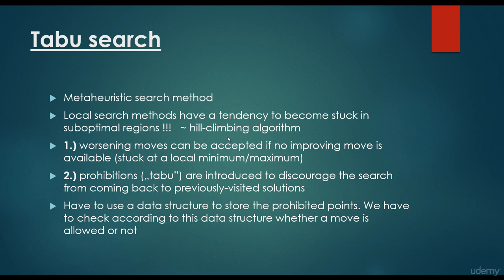The fundamental basis of hill climbing is that it follows the gradient — it accepts better and better results. So maybe worsening moves can be accepted if no improving move is available. This statement is very similar to simulated annealing, where we accept bad moves as well. This is good because we are able to avoid local optima, whether it is a minima or a maxima. And then we have the prohibitions — the so-called tabu — introduced to discourage the search from coming back to previously visited solutions.